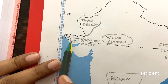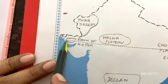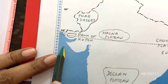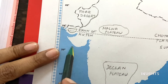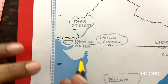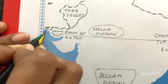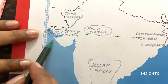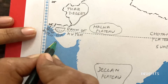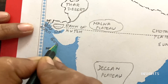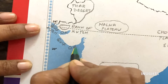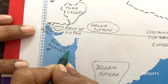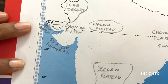This is the Rann of Kutch. You can see it - it is small. This is the Gulf of Kutch. The smaller one is Gulf of Kutch and the bigger one is Gulf of Kambat, also called Gulf of Kambay.